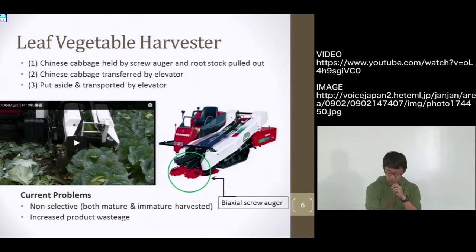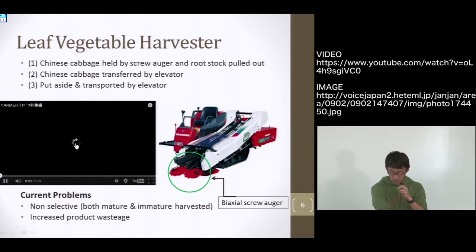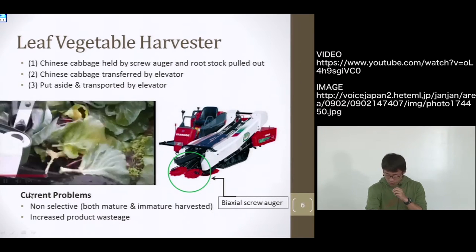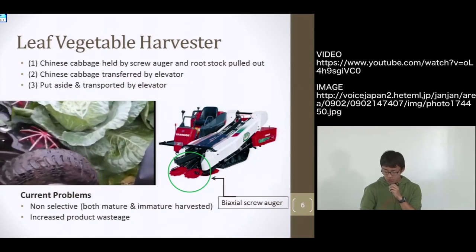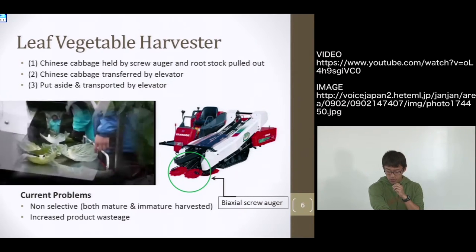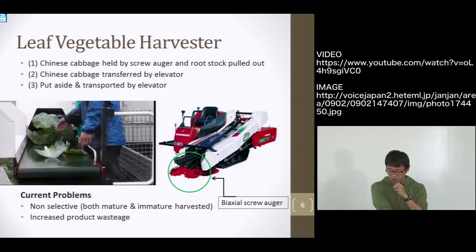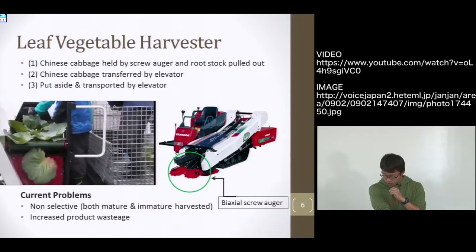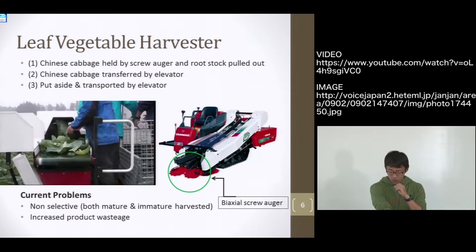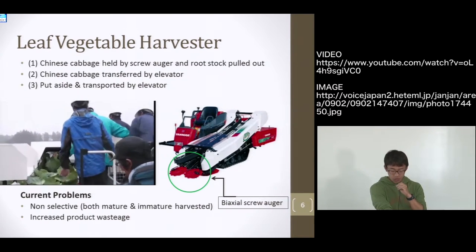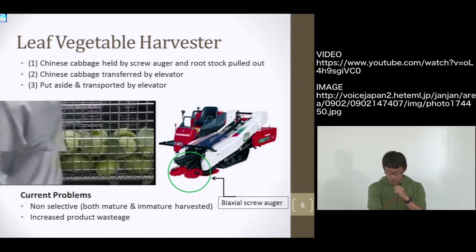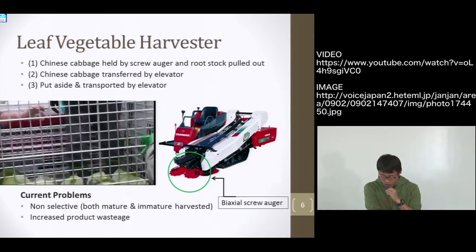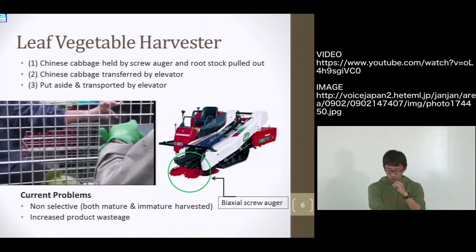And next is leaf vegetable harvester. This is cabbage harvester. The bike share screw auger holds the base of cabbage between the left and right grooves, pull them out of the ground and adjust the cutting height. At the same time, other leaves and base are cut and transferred to the end of the screw auger to be returned to the field. Pincer grape belt moves with a screw auger to pull out cabbage and transport them to an elevator after discarded leaves and bases. But this machine has also current problems. It harvests non-selectively. That is, they harvest both mature and immature products. So wastage of products definitely increases.